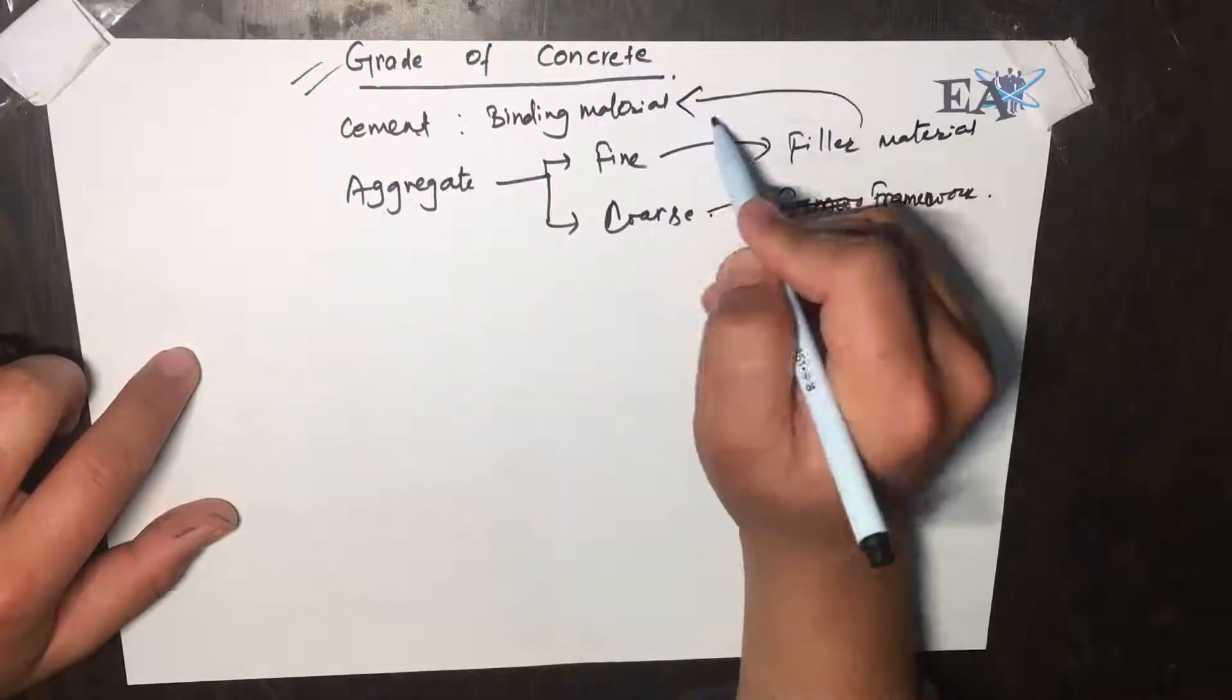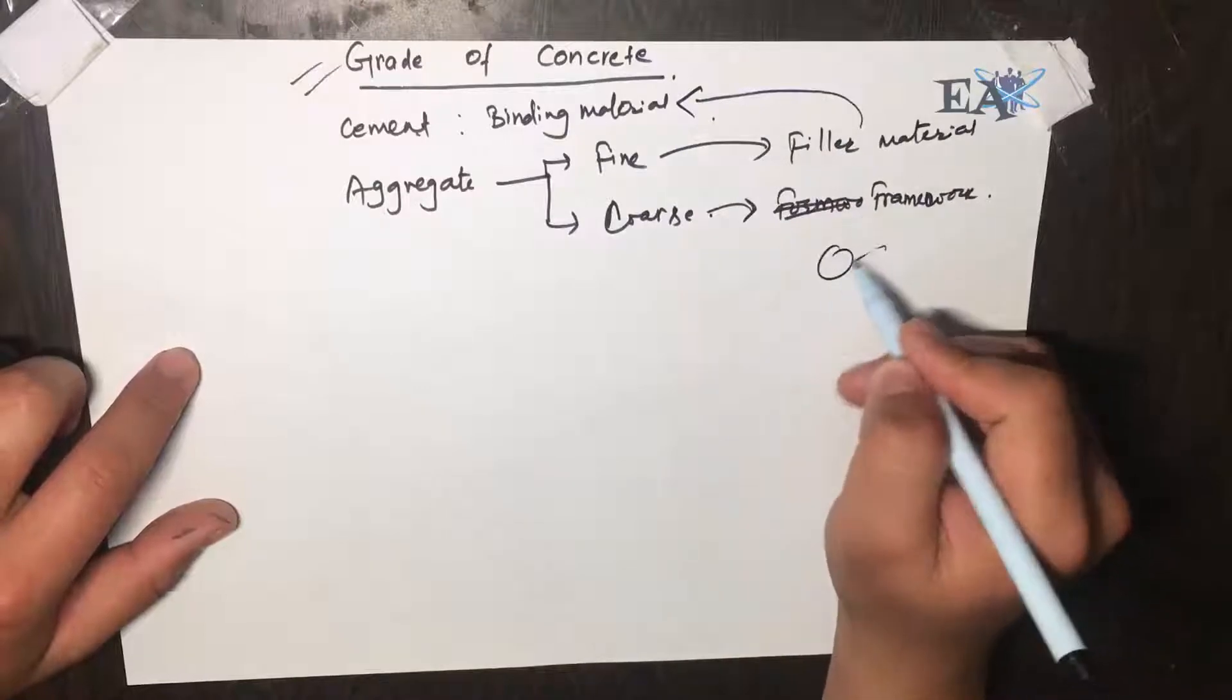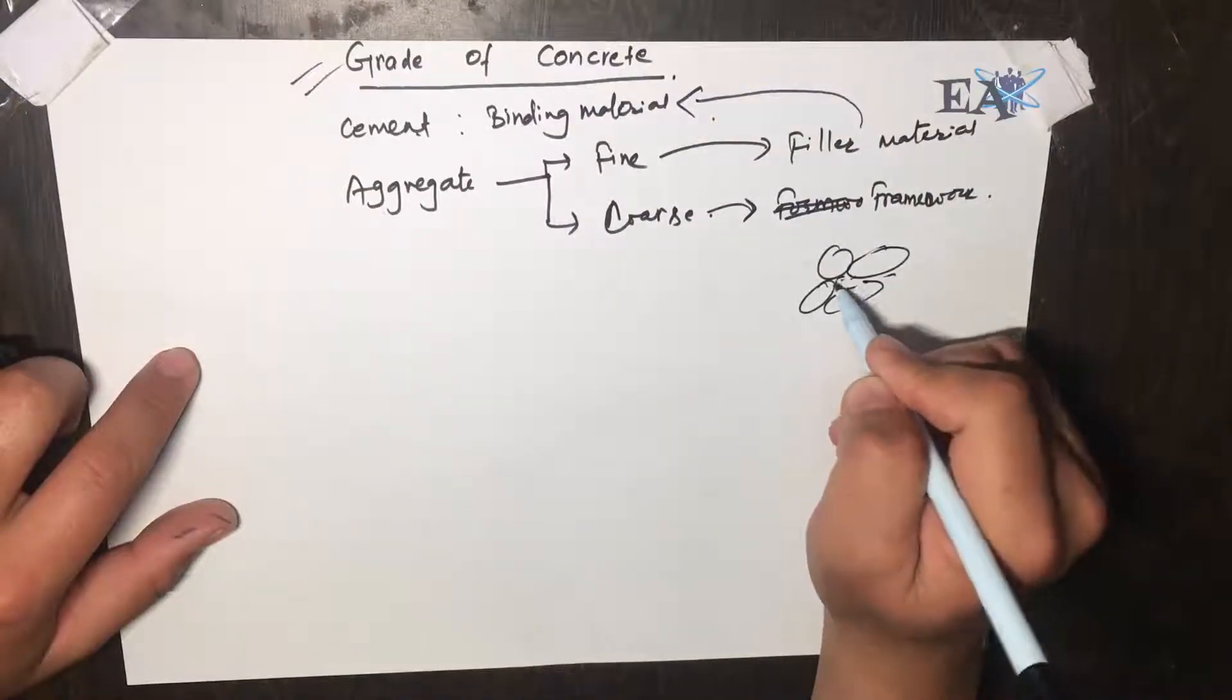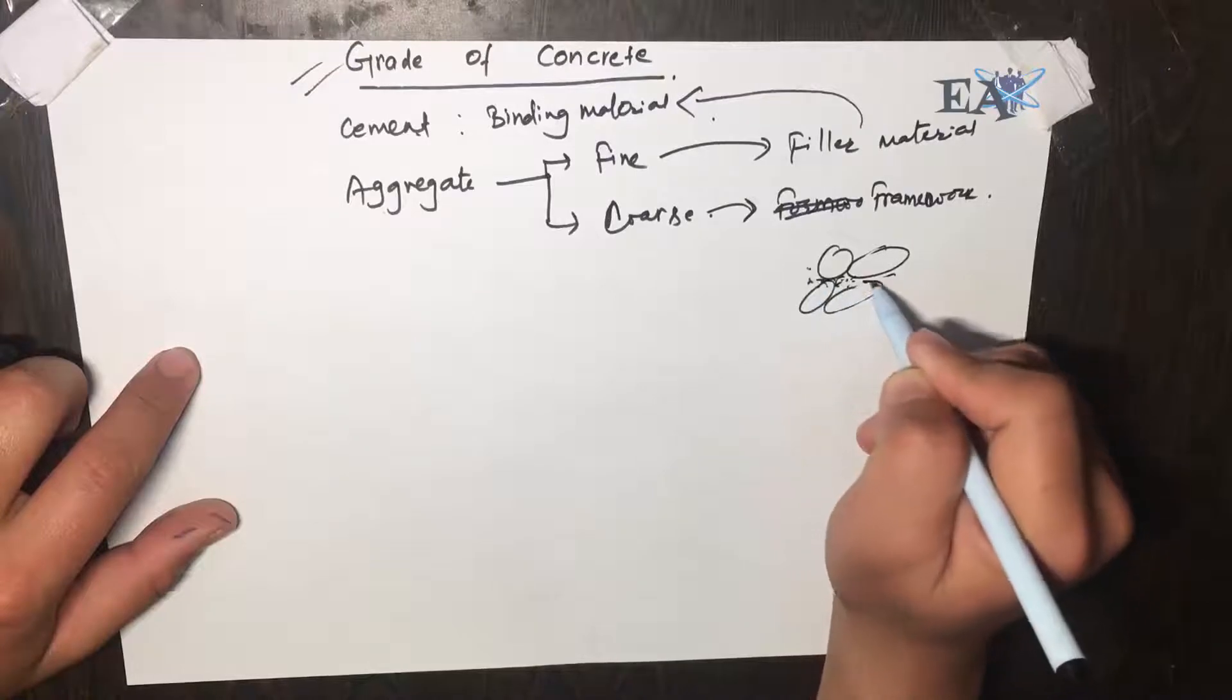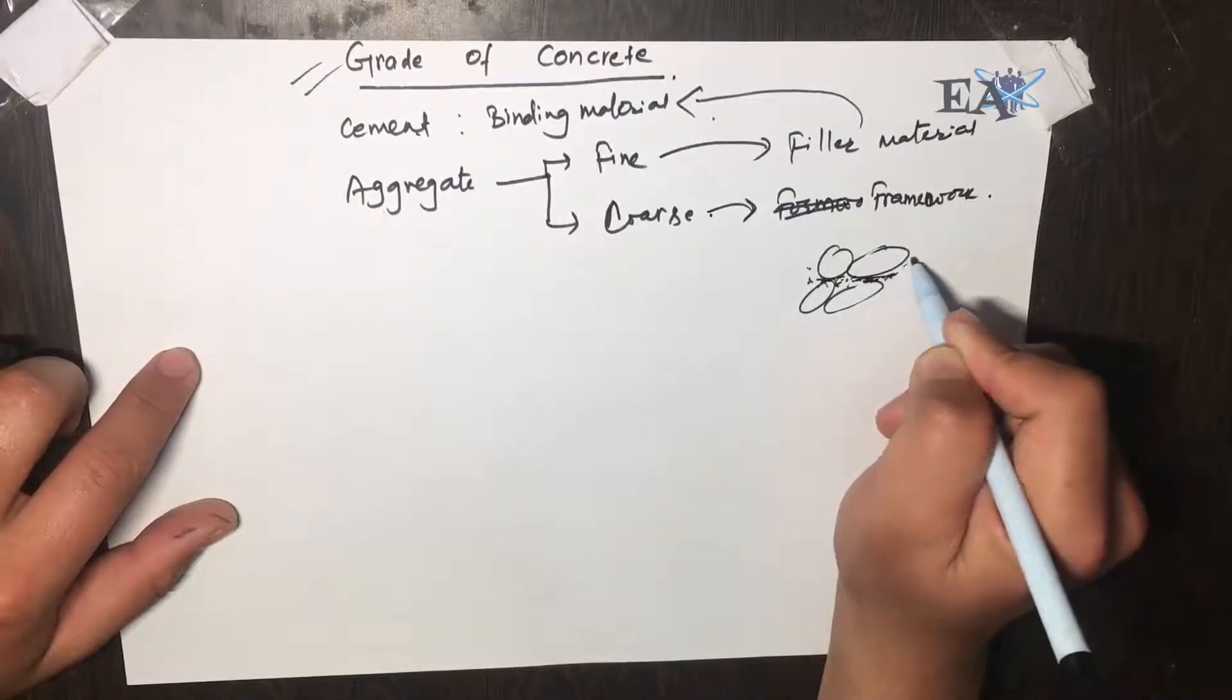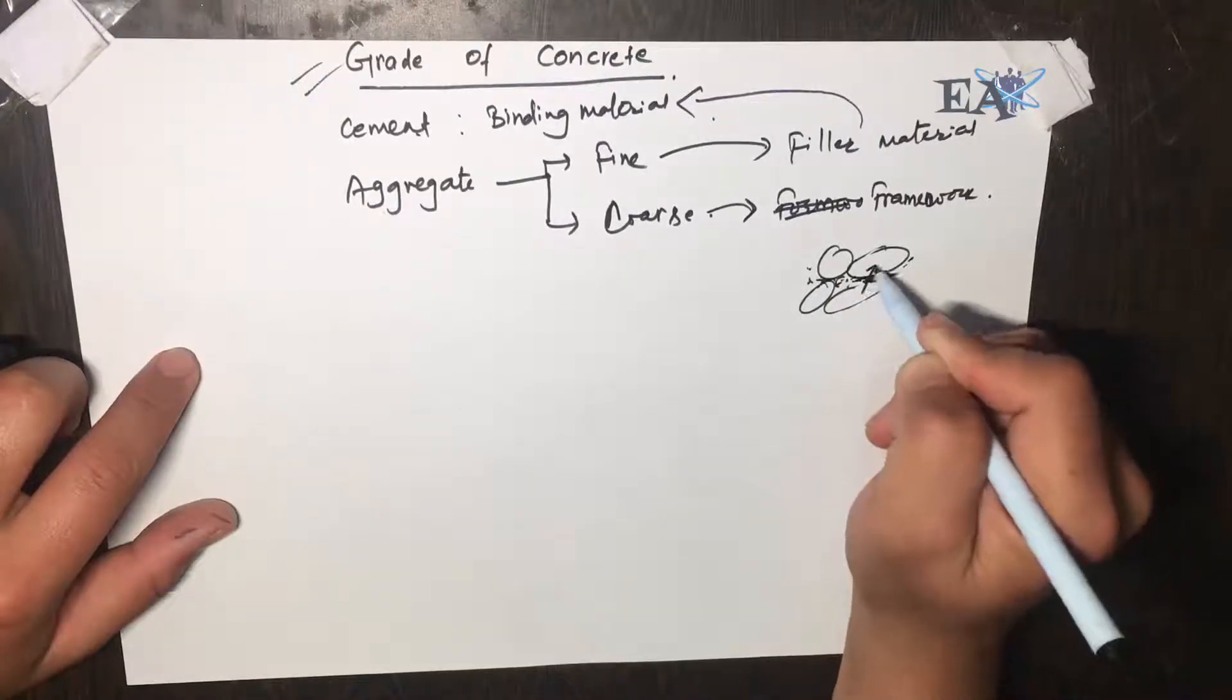So if this is our coarse aggregate, then the fine aggregate fills the voids between the aggregates and it binds two coarse aggregates.